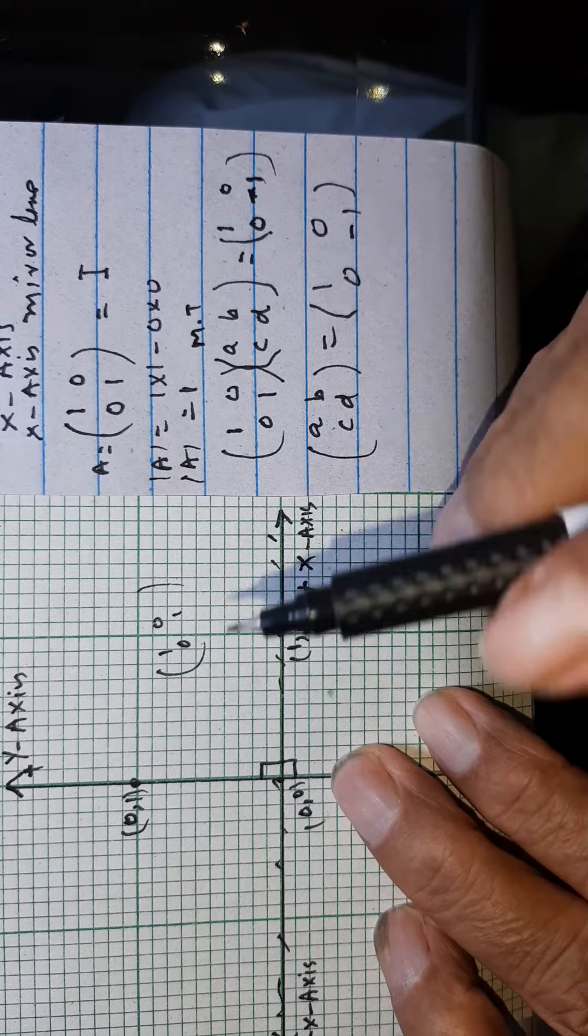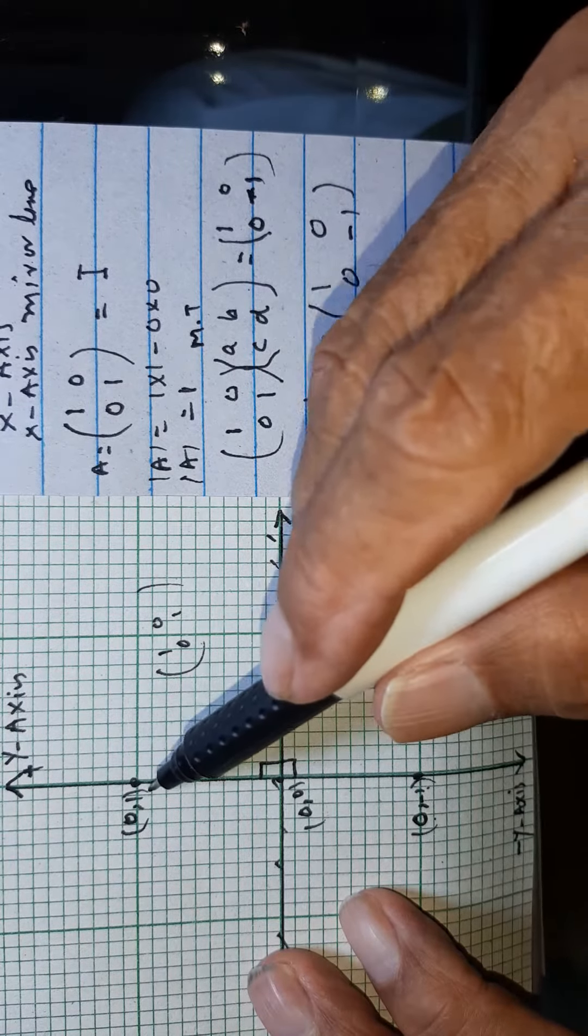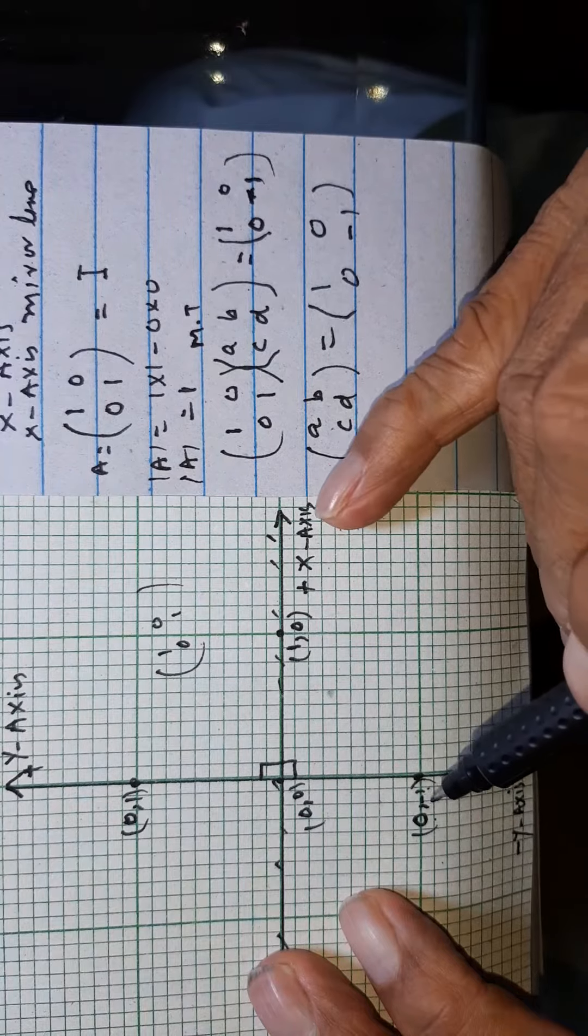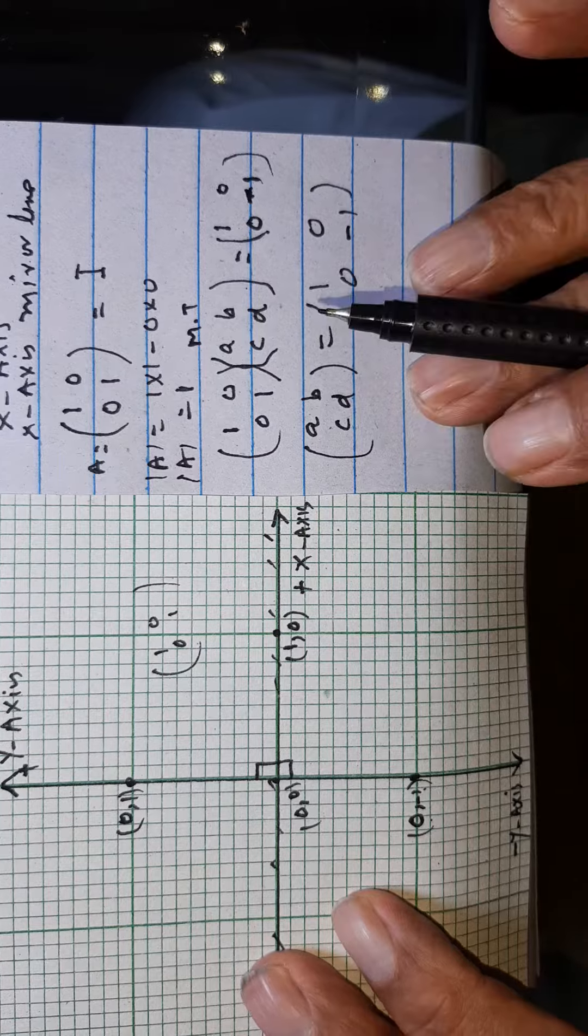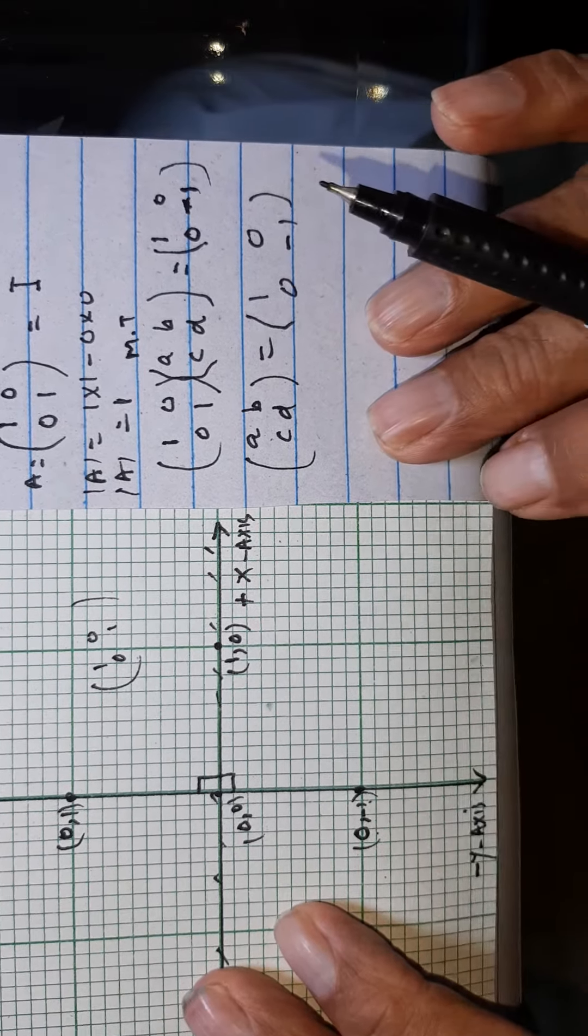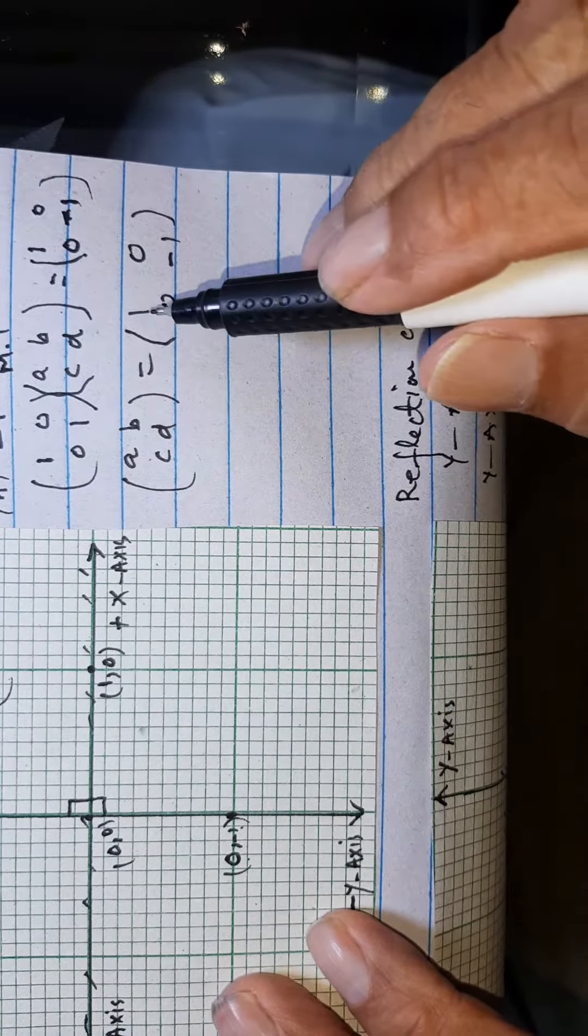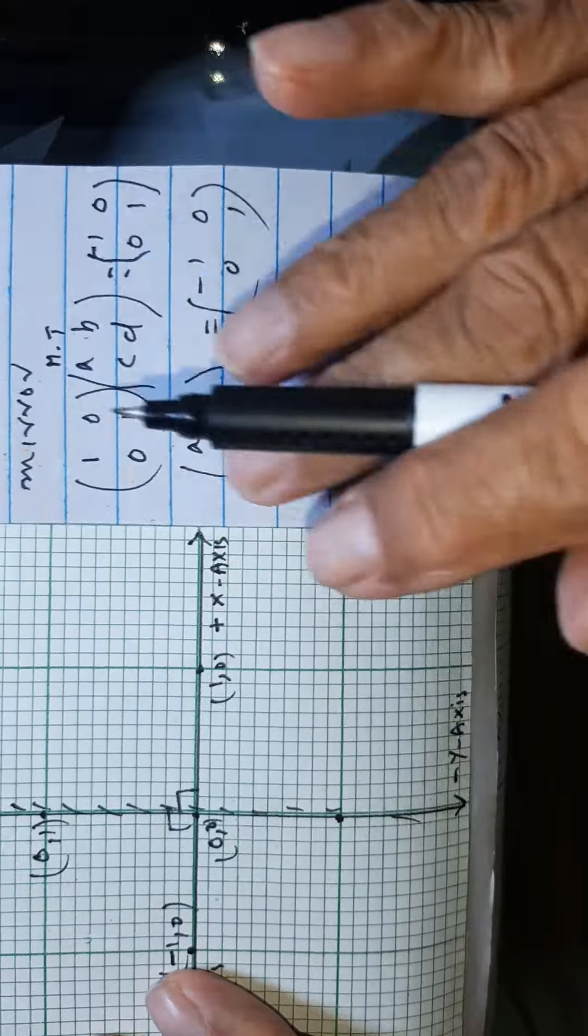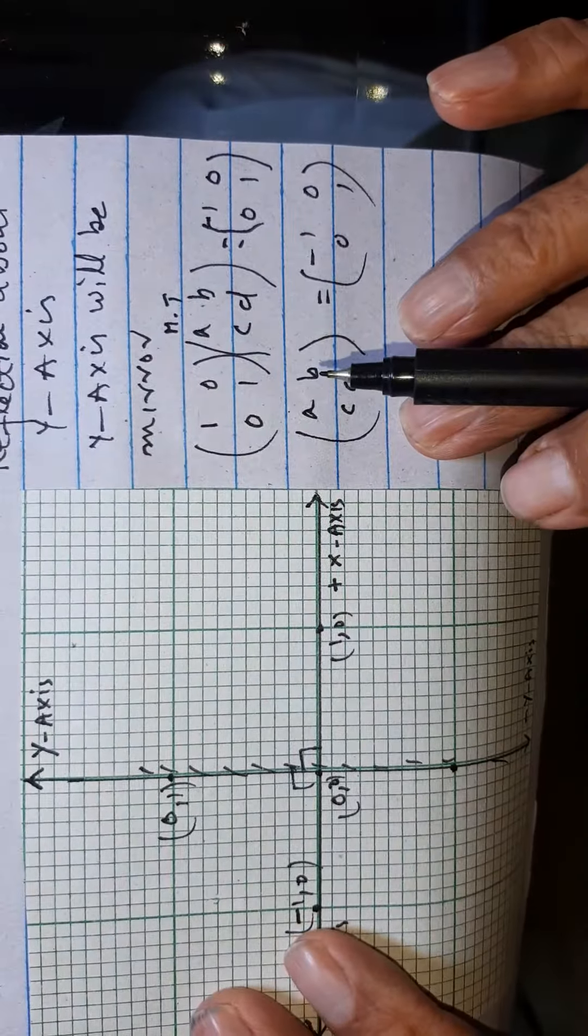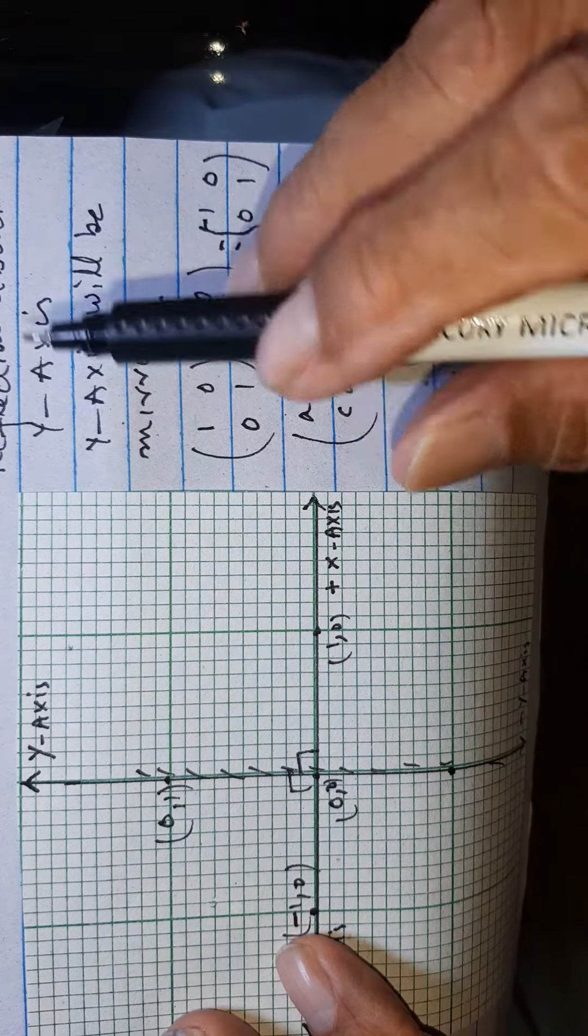Therefore, the matrix of transformation about the x-axis is 1 0 and 0 minus 1. And now here, this is a reflection about the y-axis.